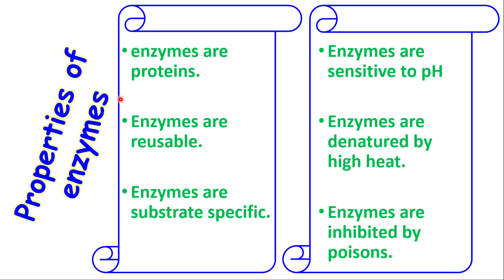The properties of enzymes include: one, that enzymes are proteins; enzymes are reusable; enzymes are substrate-specific; enzymes are sensitive to pH — so once the level of pH changes, the enzyme reactivity may change as well; enzymes are denatured by high heat; and enzymes are inhibited by poisons. Let's go into each property right now.